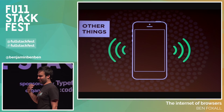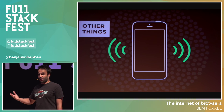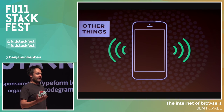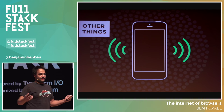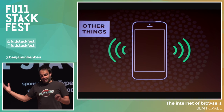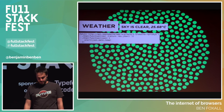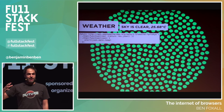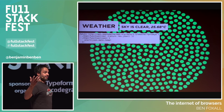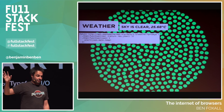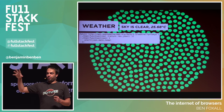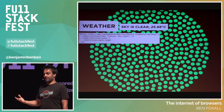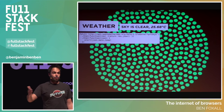The other thing our devices have is that they're connected to other things. We can connect our devices through web APIs to anything exposing that. For instance: sky is clear, 25.68 degrees centigrade — this is the weather in Tokyo, accessible through just a fetch command. We can talk to another device that knows the weather in Tokyo with the same ease as accessing a local property like device orientation. This is really powerful.